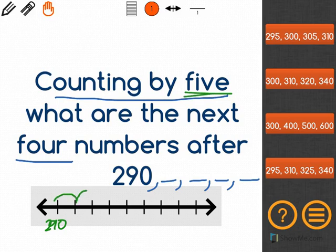291, 292, 293, 294, 295. That way I know that 1, 2, 3, 4, 5 after 290 is 295.